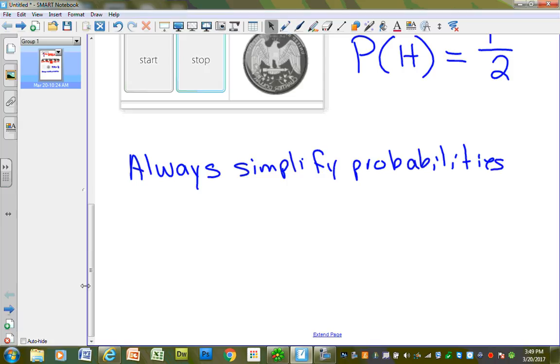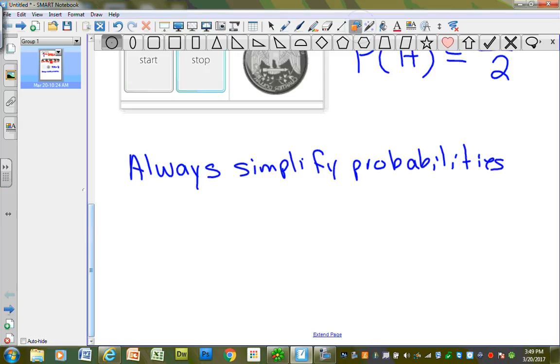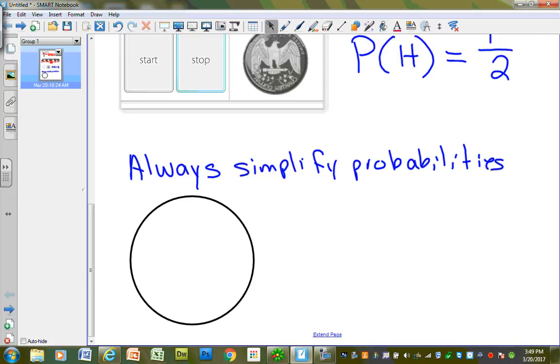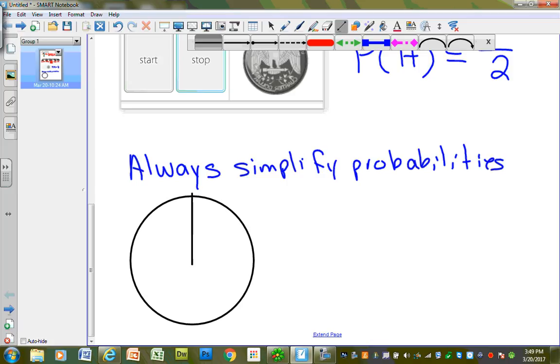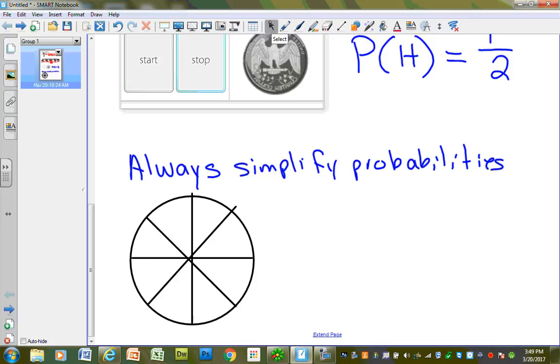For example, let's say that I have a spinner here. So, I'm going to get a circle. I'm going to draw a spinner. We'll divide it up into eight parts. And this isn't going to be perfect, but we're going to pretend that these are all the same way. So there's my spinner. And I've got my little arrow that's going to spin. And I've got the numbers one, two, three, four, five, six, seven, and eight on my spinner.